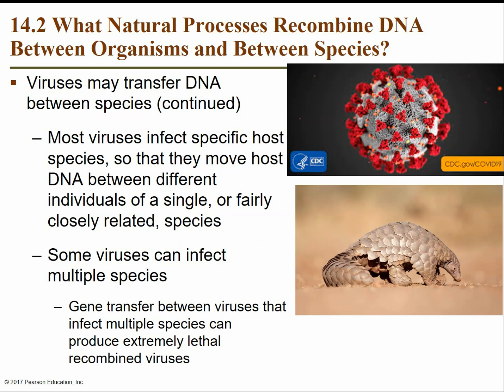Bats are natural reservoirs for coronaviruses — the SARS virus also originated from bats. Bats have very strong immune systems and can carry lethal viruses without being sick themselves. In places like wet markets where exotic animals are kept in close proximity — animals that would never interact in nature — viruses have the opportunity to jump between species. This is essentially humans bringing different species together and giving these viruses an opportunity to cause widespread pandemics.